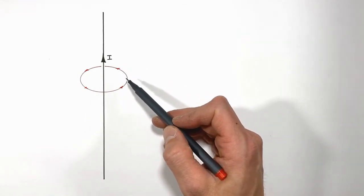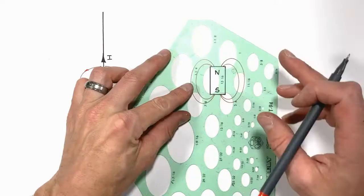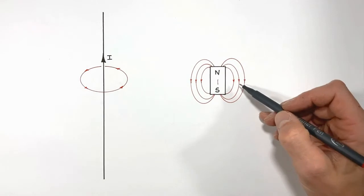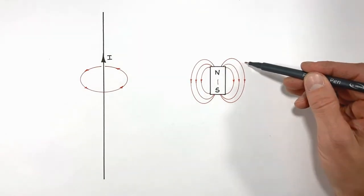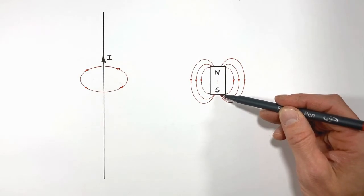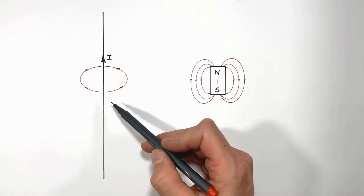To better understand the magnetic field produced by a charge moving in a wire, let's back up to the magnetic field around a permanent magnet. The magnetic field produced by a permanent magnet starts at the north end of the magnet and runs all the way to the south end of the magnet. It has a start and a finish.